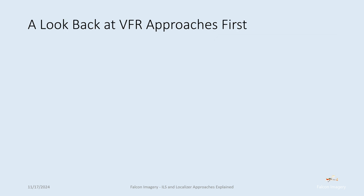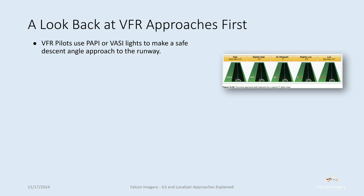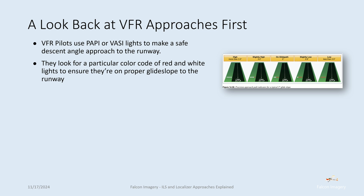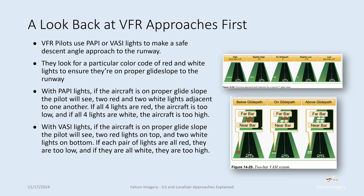Before getting further into ILS and localizer approaches, let's look back at VFR approaches. VFR pilots use PAPI or VASI lights to make a safe descent angle approach to the runway, using a color code scheme of red and white lights to ensure they're on proper glide slope. With PAPI lights, if the aircraft is on proper glide slope, the pilot will see two red and two white lights. If all four lights are red, the aircraft is too low; if all four are white, the aircraft is too high.